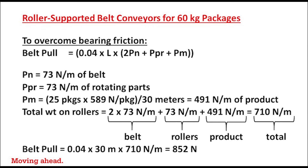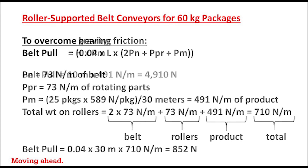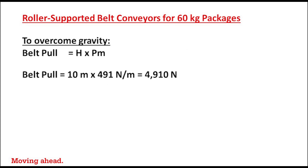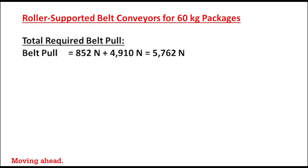Required belt pull to overcome friction becomes 0.04 times 30 meters times 710 newtons per meter, or 852 newtons. For the pull required to overcome gravity, H of 10 meters times pm of 491 newtons per meter yields 4910 newtons. Adding both components together, total belt pull becomes 5762 newtons.